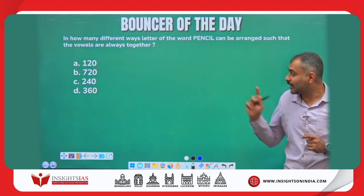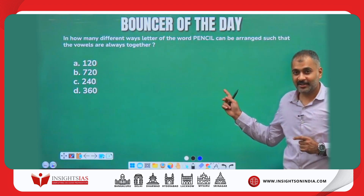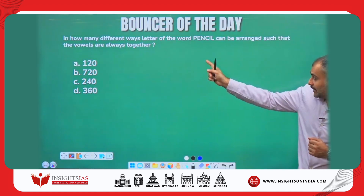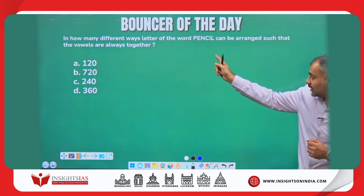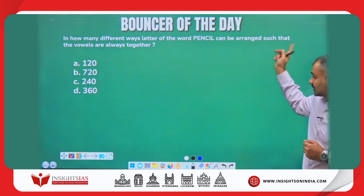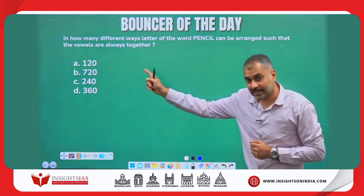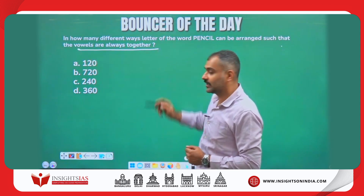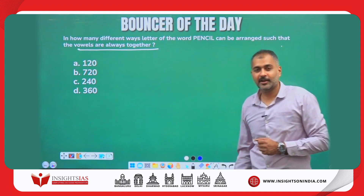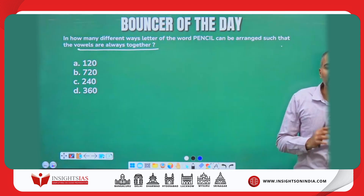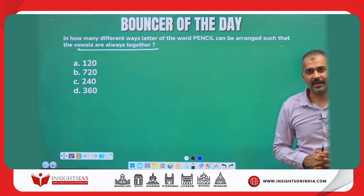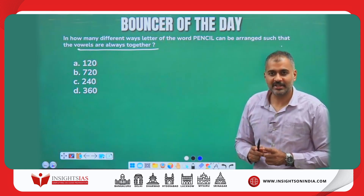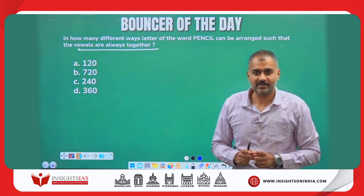And guys, a very similar question — I am giving you this as the bouncer. In how many different ways can the letters of the word PENCIL be arranged such that the vowels must always be together? Try to answer this question and put the answer in the comment section. We will explain this question in the next video. Thank you.